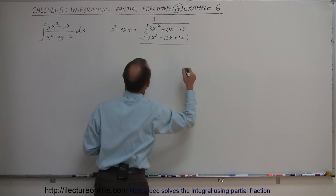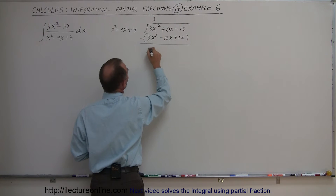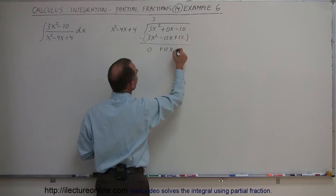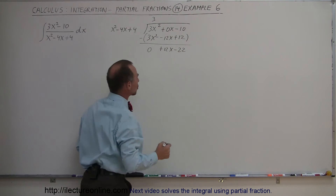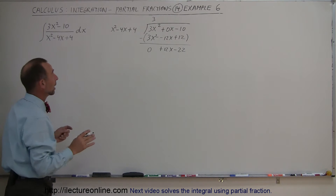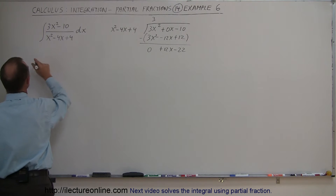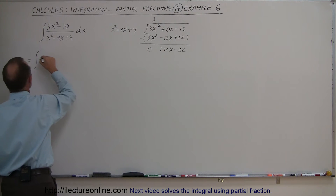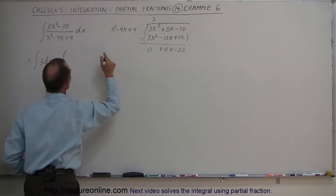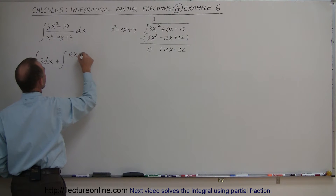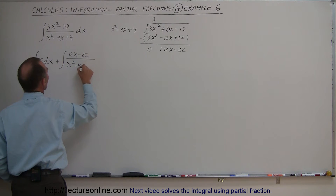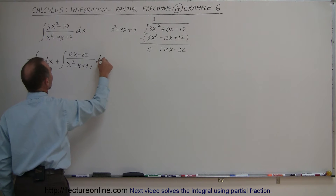We subtract the second row from the first row and here we get 0, there we get plus 12x, and the minus makes it a minus 22. So now we can rewrite this integral as the sum of two integrals: the first integral will be 3 dx, plus the second integral which is the remainder 12x minus 22 divided by the denominator x squared minus 4x plus 4, times dx.